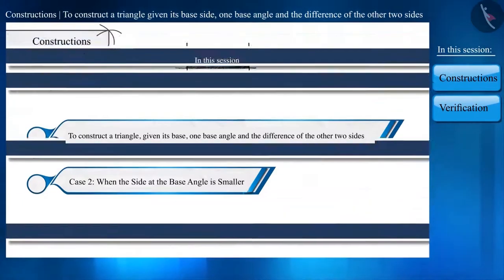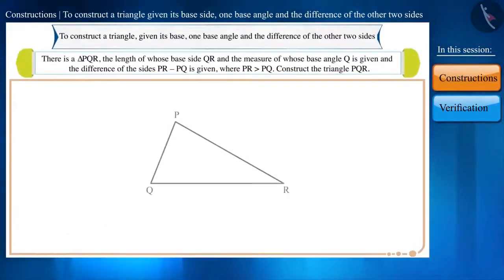Let's again see what is case 2. Suppose we have a triangle PQR, where the length of the base side QR and the measure of the base angle Q is given and the difference of the sides PR-PQ is given, where PR is greater than PQ. Friends, here you can see that side PQ formed on the base angle Q is smaller than the side PR. This is the difference between case 1 and case 2. So let's see the steps for construction of a triangle like this.